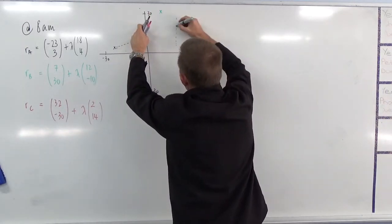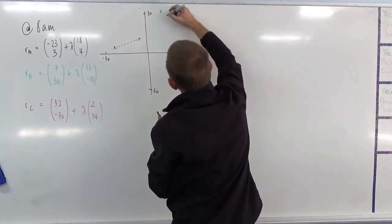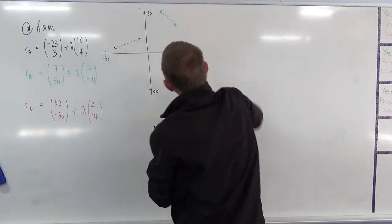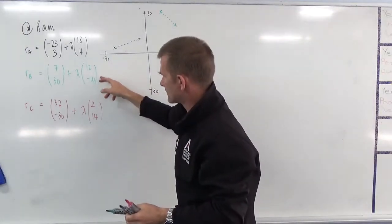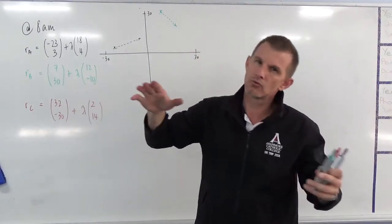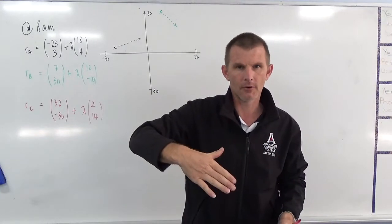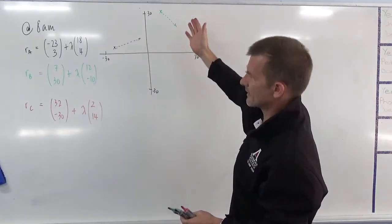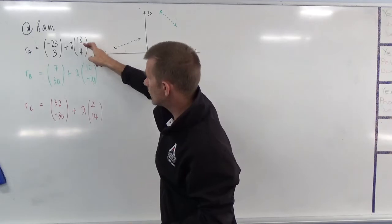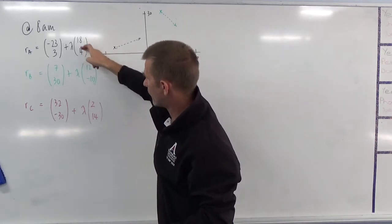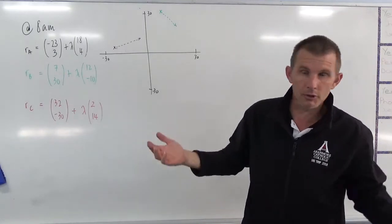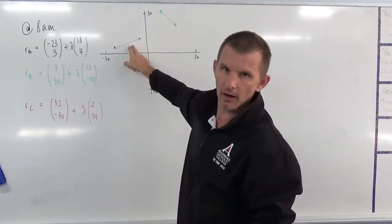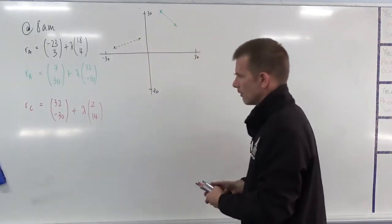So 7 here and then 30 here. And it's moving at 12 minus 10. So it's moving this way at 12, this way at minus 10. So we're coming down. So 12, I might say, well, what would that be? That would be then 19. So I'm going to say 19 is about there. So it's got to come to roughly in line with that. And then here it would be at 20. So there's 30. 20 would move down to about there. Something like that. So that would be where that one is moving to.